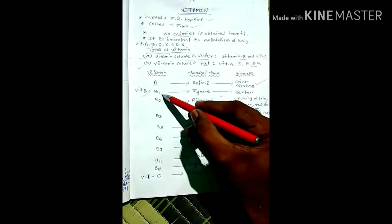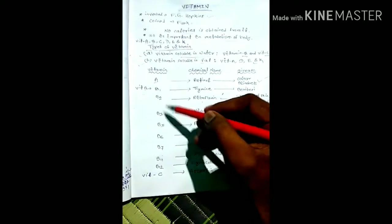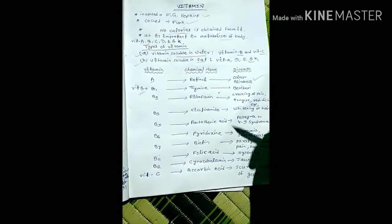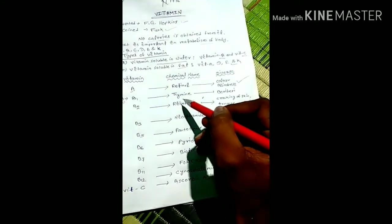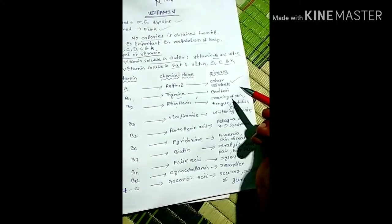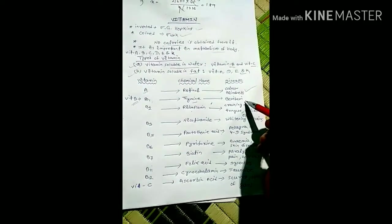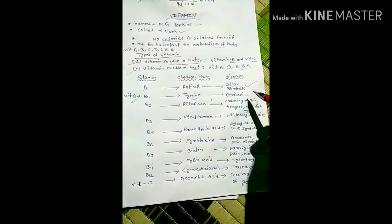Under vitamin B, there are many types: B1, B2, B3, B5, B7, B11, B12. Vitamin B1's chemical name is thiamine, and the deficiency of vitamin B1 causes beriberi.